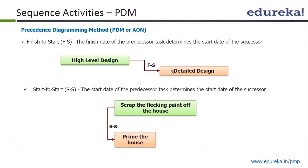In start to start, the successor's start depends on the start of the predecessor — that is start to start. The example is scraping the flaking paint of a house. Another example: leveling the concrete, which is the successor, cannot begin until pouring the foundation, which is the predecessor, begins. You cannot begin priming the house unless and until you scrape the flaking paint of the house — that's the start-to-start relationship.